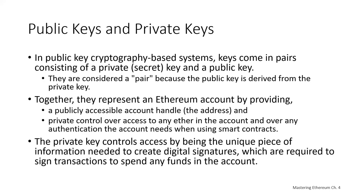In public key cryptography, keys come in pairs: a private secret key and a public key. For Ethereum, the public key is computed from the private key — you create the private key first, then compute the public key. Think of it like a password and email address, or a bank account number and PIN: the password or PIN provides control, while the account number or email address identifies you to others. In practice, private keys are hidden away in your Ethereum wallet file and managed by wallet software.